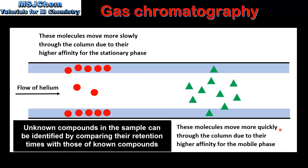Using gas chromatography, an unknown compound can be identified by comparing its retention time with that of a known compound.